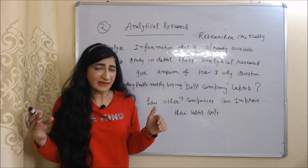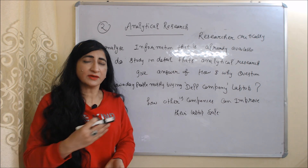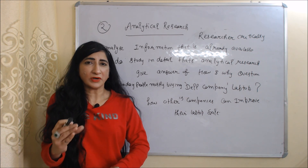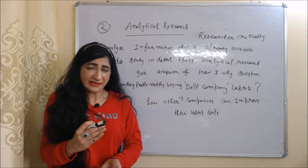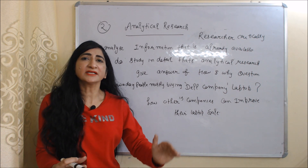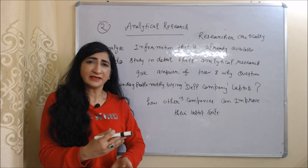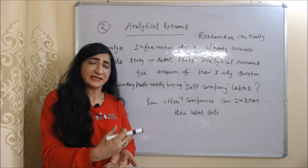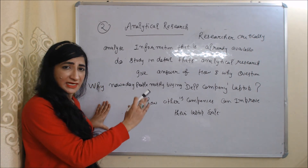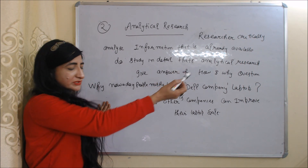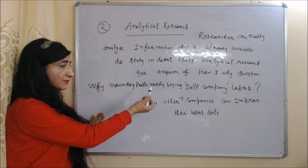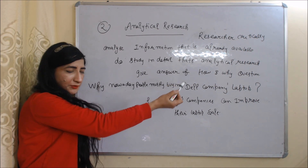Second is analytical research. Analytical research means the researcher critically analyzes information that is already available. Here, critically analyzing information means this research studies in detail — that is why analytical research can give answers to how and why questions.